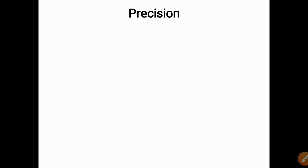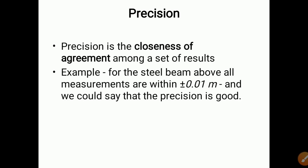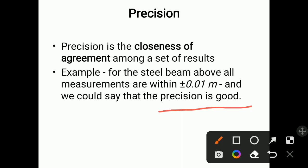What is precision? Precision is the closeness of agreement among a set of results. If you measure some parameter continuously in the form of sets, the closeness of agreement between those values is called precision. For the steel beam example, if all measurements are within plus or minus 0.01 meter, we could say that the precision is good and the instrument is precise.